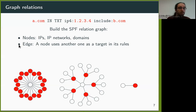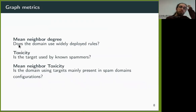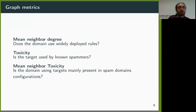To represent this information, we built a graph where each node is an IP, an IP range, or a domain, and an edge between node A and B represents that node A has an SPF configuration pointing to node B. We saw interesting patterns in this graph, like the ones presented here, and we built some metrics to describe some graph properties. We focused on two main properties: neighbor degree and the proportion of neighbors already being in blacklists. Those metrics describe that if a domain has a custom configuration similar to the configuration of a known spam domain, it will probably be used to send spam in the future.